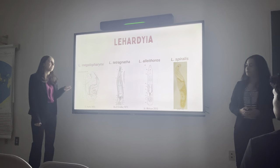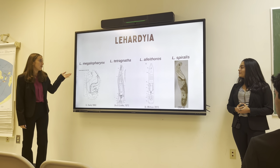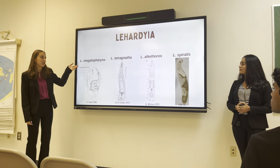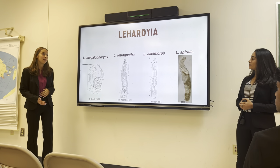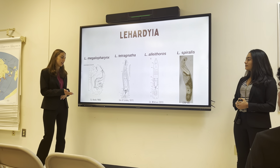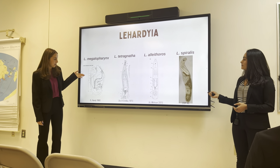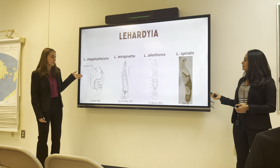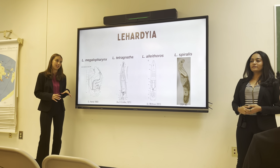This is the Leihardia genus, and we have Megalophorus, Tenchigrantha, and Allynchoros already described, and we are adding Leihardia spiralis. These species are going to differ in lots of shapes and sizes within their organs and their overall sizes.